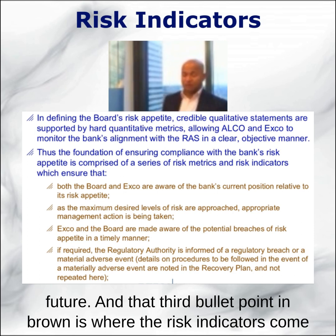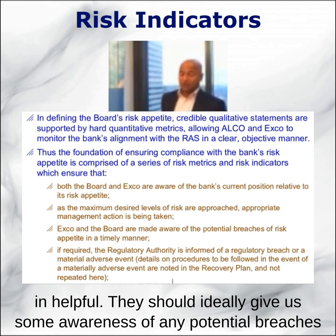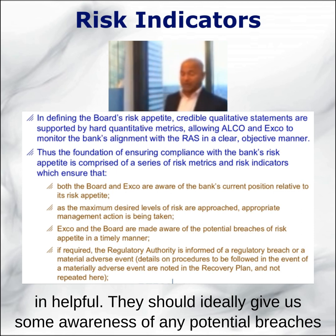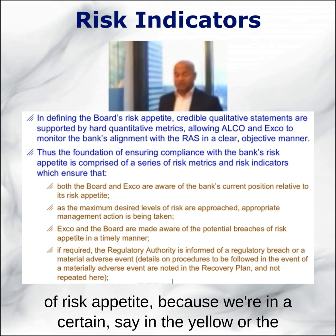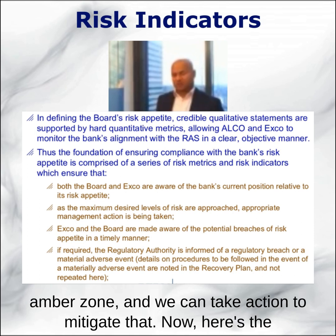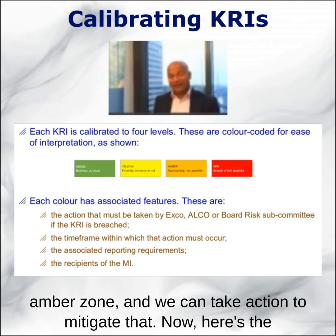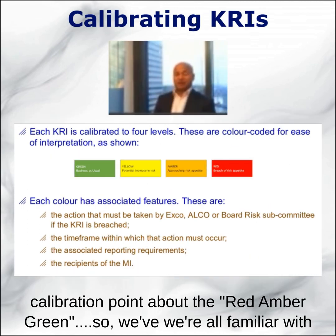That third bullet point in brown is where the risk indicators come in and help. They should ideally give us some awareness of any potential breaches of risk appetite, because we're in a certain yellow or amber zone, and we can take action to mitigate that. Now, here's the calibration point about red, amber, green.